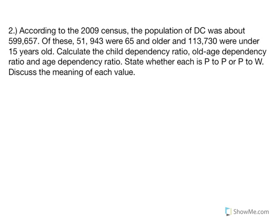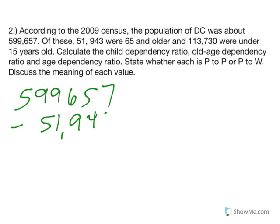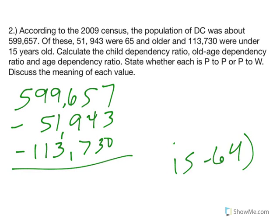Number 2, I would recommend hitting pause and trying to do all three ratios yourself, write your sentences, and then come back and see if yours match mine. We're going to do the same thing with this - take your total DC people, 599,657, subtract the oldies, 51,943, and subtract the youngins, 113,730. My working class, my 15 to 64, will have a total of 433,984. There's our comparison value for our ratios.